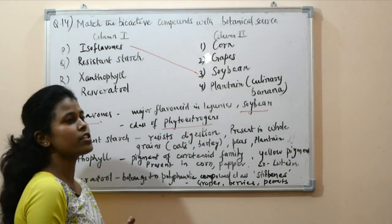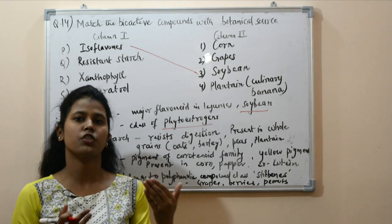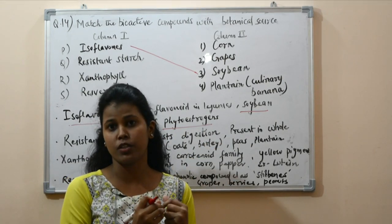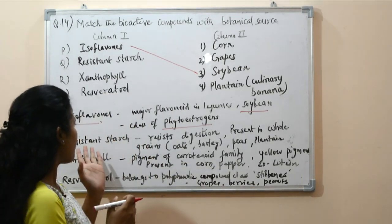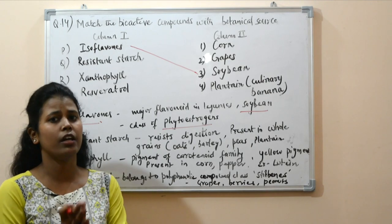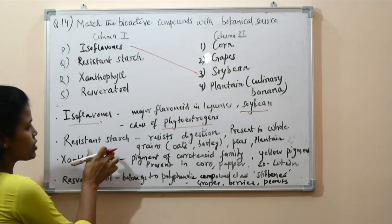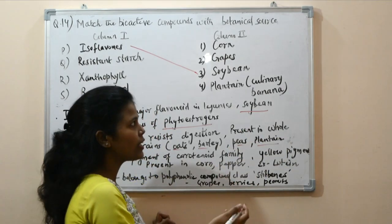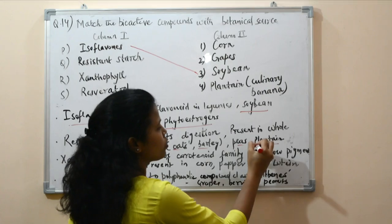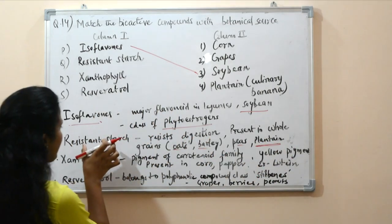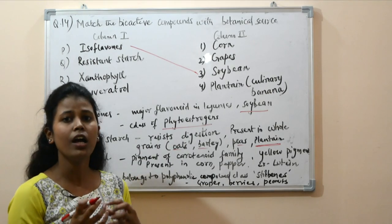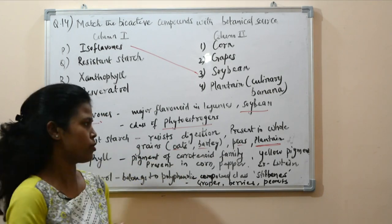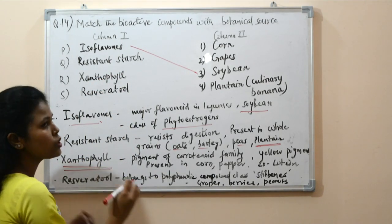Resistant starch refers to starch that escapes digestion in the small intestine and undergoes fermentation in the large intestine, behaving like dietary fiber. It is present in whole grains like oats and barley, in legumes, and in plantain. Plantain is a culinary banana with a very high starch content. In raw or green bananas, this starch exists as resistant starch, which can be converted to normal starch by heating, baking, or cooking.